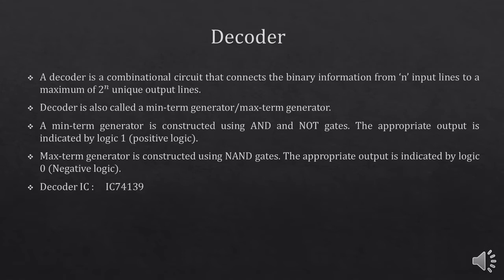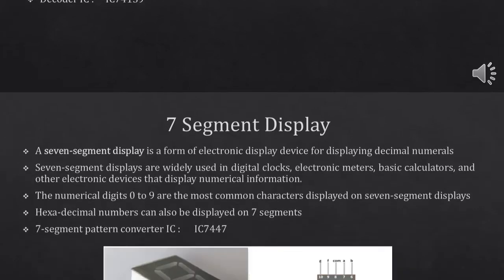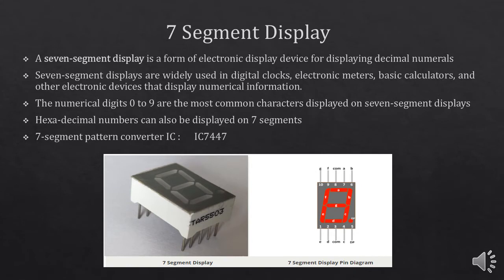We are going to use IC 74139 for decoding. In part 2 of this lab, you are going to use a 7-segment display. A 7-segment display is a form of electronic display which is used for displaying decimal numbers. 7-segment displays are most widely used in digital clocks, electronic meters, and basic calculators and other electronic devices which display information.